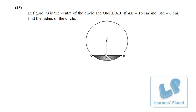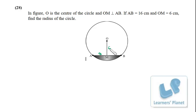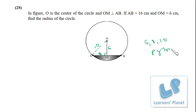Quick problem: OM is perpendicular to AB. AB = 16, so AM = 8; OM = 6. Using the 6-8-10 Pythagorean triplet directly, the radius = 10 cm.